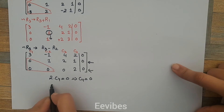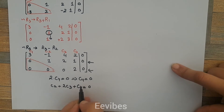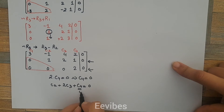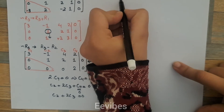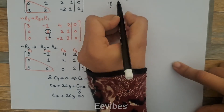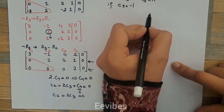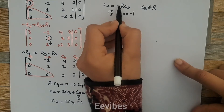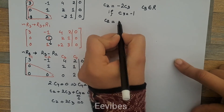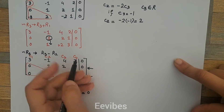The next equation is c2 + 2c3 + c4 = 0. Since c4 = 0, we have c2 + 2c3 = 0, so c2 = -2c3. Here c3 is a free variable and can take any real value. I choose c3 = -1 to eliminate the minus sign, giving c2 = -2*(-1) = 2.